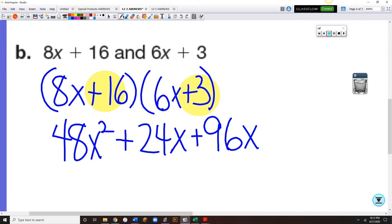8x times a plus 3 is plus 24x. 16 times a plus 3 is also 48. 16 times 6x is 96x.